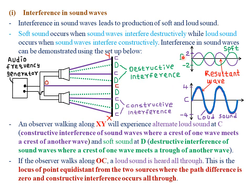At point D, one wave travels in the negative direction and the other in the positive direction — they are out of phase and cancel each other, producing a soft sound. For constructive interference at point C, the two waves merge to give a large combined wave, producing a loud sound.